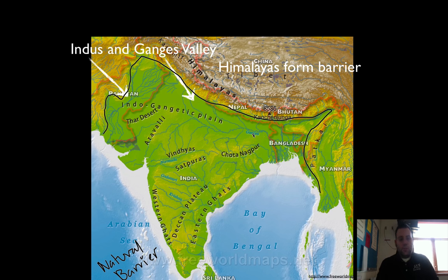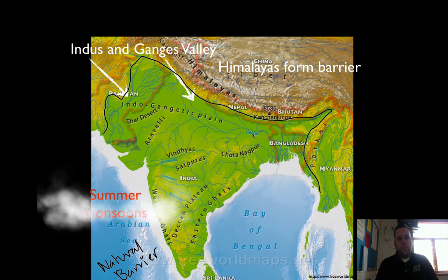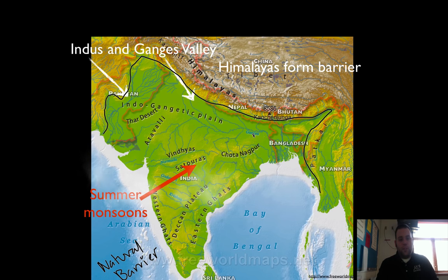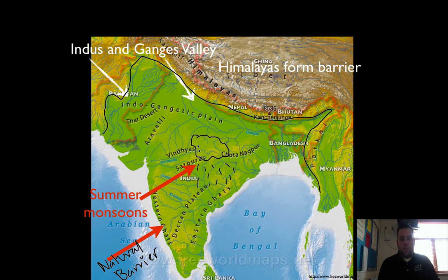Other ways that we get rain in India are because of monsoons. A monsoon is a seasonal wind. In the summertime, the monsoons blow from the oceans and bring all of this moisture in, so this is when it rains. When these winds are blowing, it's raining like cats and dogs in India. If you've ever been to India or met anybody from India, they will tell you that during the rainy season, it rains a lot.